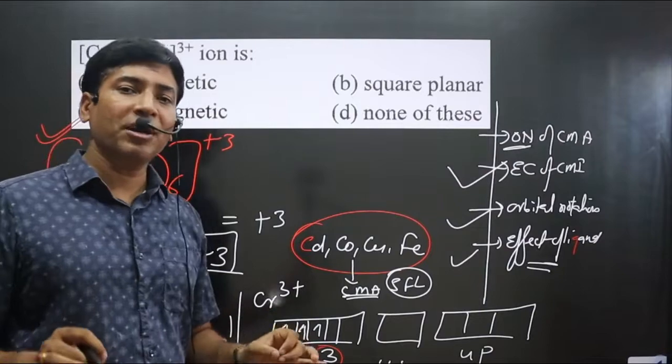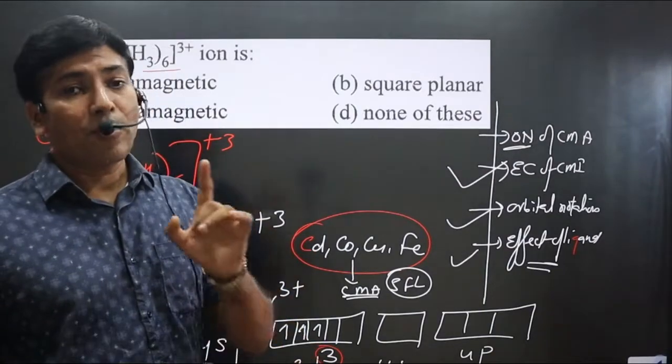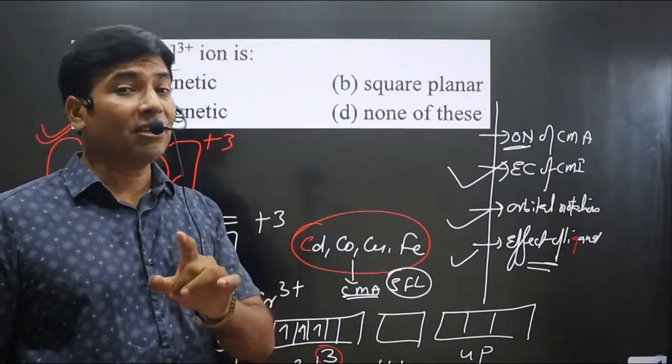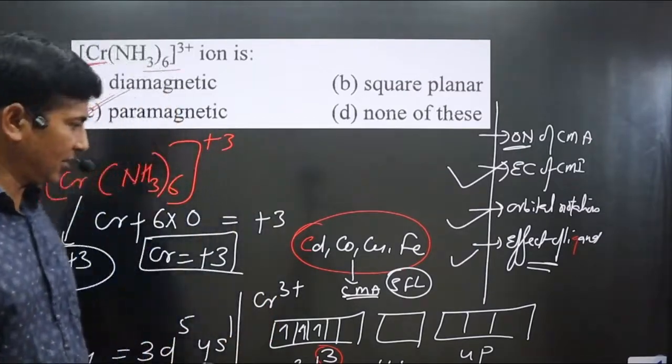It is paramagnetic because it has unpaired electrons. Keep in mind, as the number of unpaired electrons increases, paramagnetic character for the complex also increases. If you like this video, please share and subscribe to the channel.